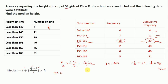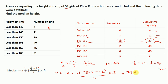Median equals L plus (N/2 minus CF) divided by F, into H. L equals 145, N/2 equals 25.5, CF equals 11, F equals 18, H equals 5. Solving: 25.5 minus 11 equals 14.5, multiplied by 5 gives 72.5. Dividing 72.5 by 18 gives approximately 4.027, and adding 145 gives approximately 149.01. So the median height is 149.01 cm.